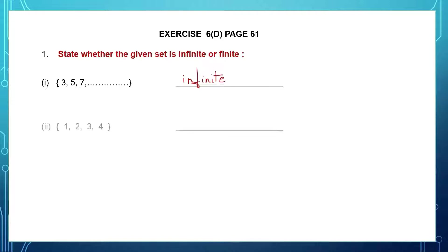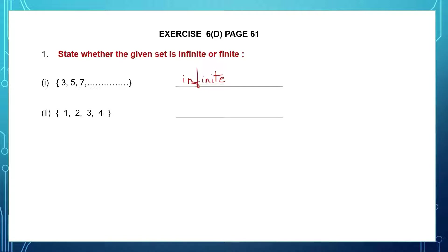Next one: 1, 2, 3 and 4. It's very clear that in this set there are only 4 elements. You can count — there are only 4 elements. So this is a finite set.